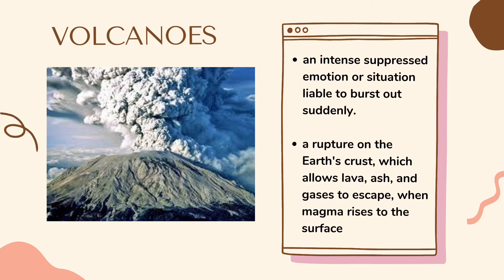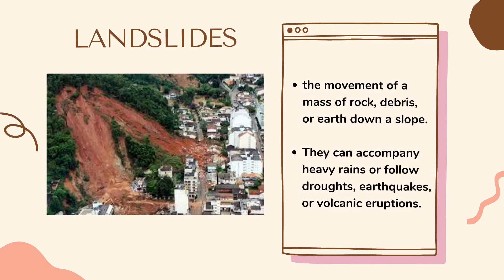Another geological hazard is a volcano, which is a rupture on the earth's crust that allows lava, ash, and gases to escape when magma rises to the surface. Volcanoes ultimately break down and weather to form some of the most fertile soils on earth, the cultivation of which has produced abundant food and fostered civilizations. The last example is landslides — the movement of a mass of rocks, debris, or earth down a slope. Landslides can accompany heavy rains, earthquakes, or volcanic eruptions.